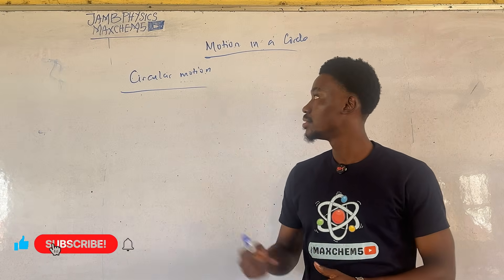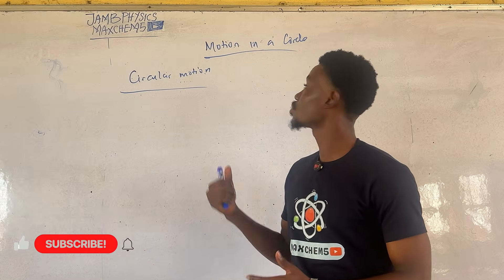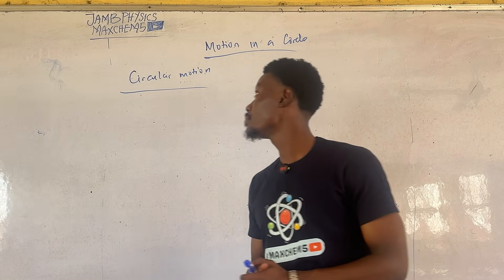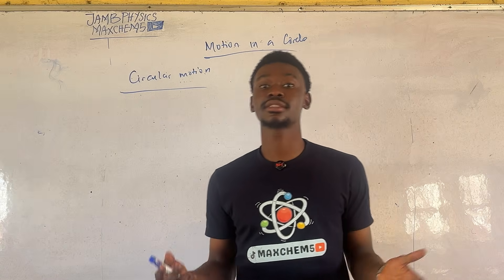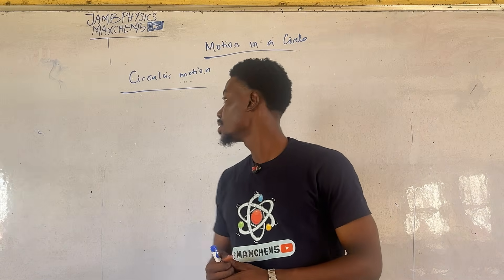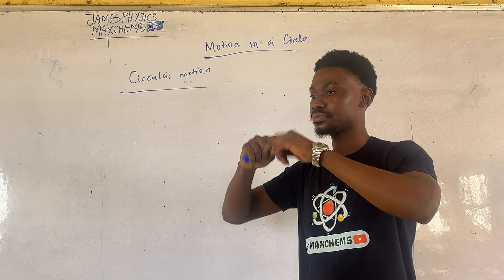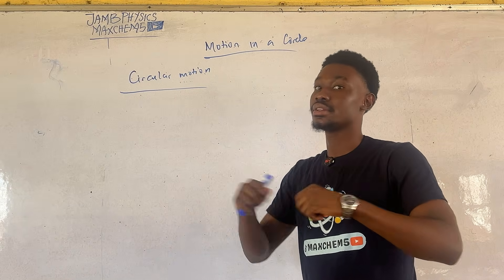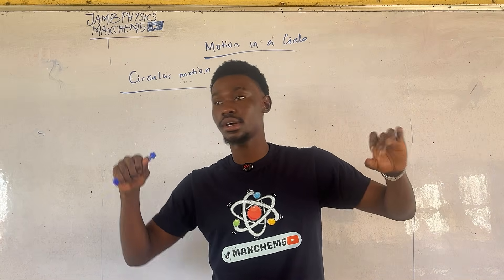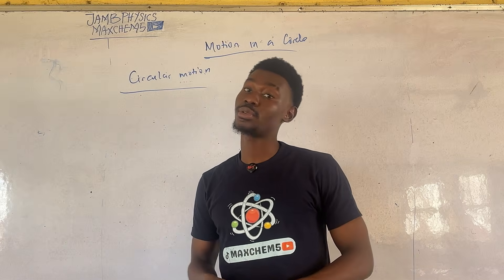Welcome back to our YouTube channel. Today's topic is circular motion and motion in a circle. Circular motion is the motion of an object along a circular path. You can think of a cord with a stone tied at the end being whirled — that's an example of circular motion.